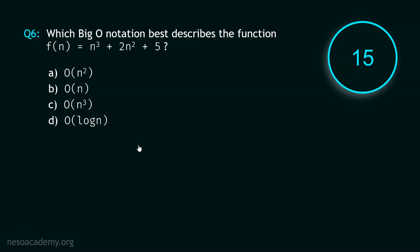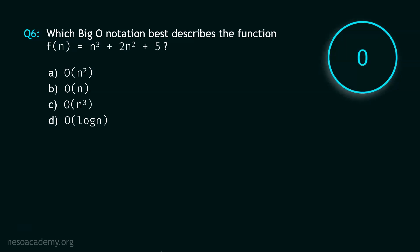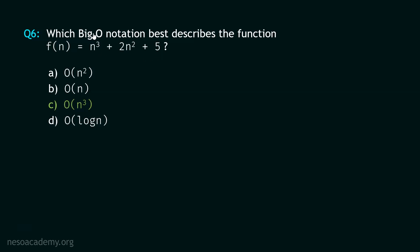Now let's move to question number 6. Your time starts now. Stop. The correct option is option C — O(N³). Because the function is N³ + 2N² + 5, and N³ is the dominating term here, big O of N³ is describing this function.